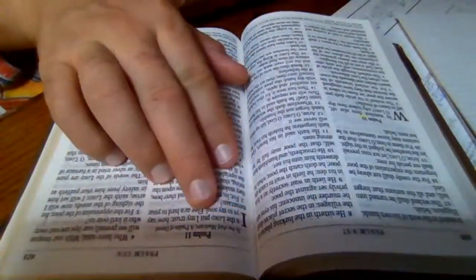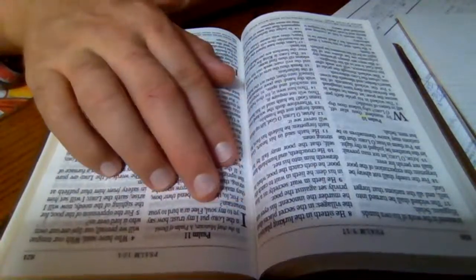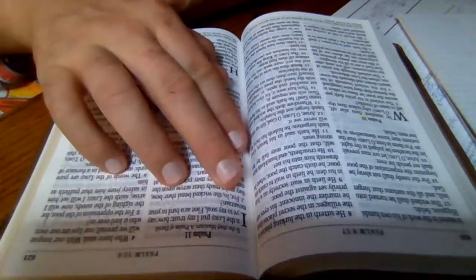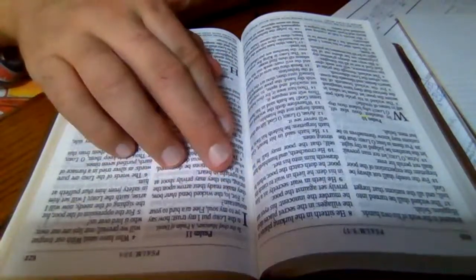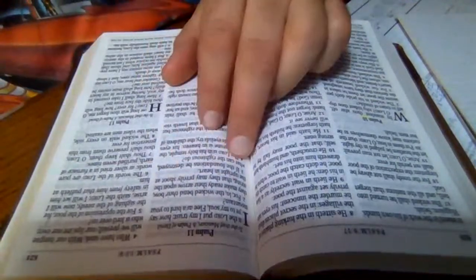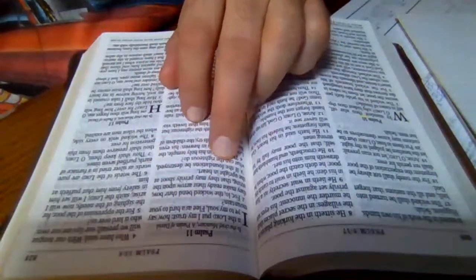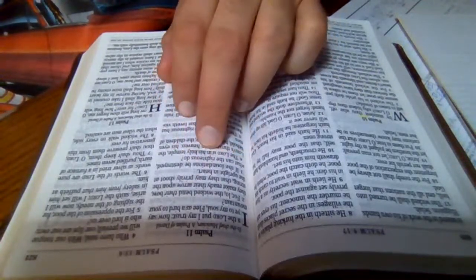In the Lord put I my trust. How say ye to my soul, 'Flee as a bird to your mountain'? For lo, the wicked bend their bow. They make ready their arrow upon the string that they may privily shoot at the upright in heart. If the foundations be destroyed, what can the righteous do?